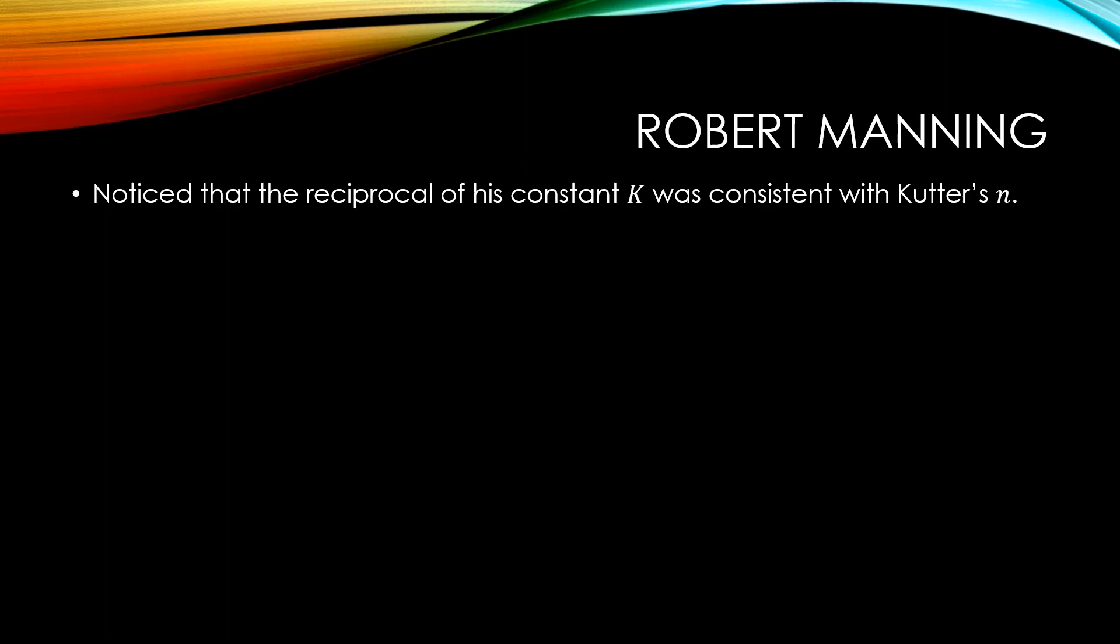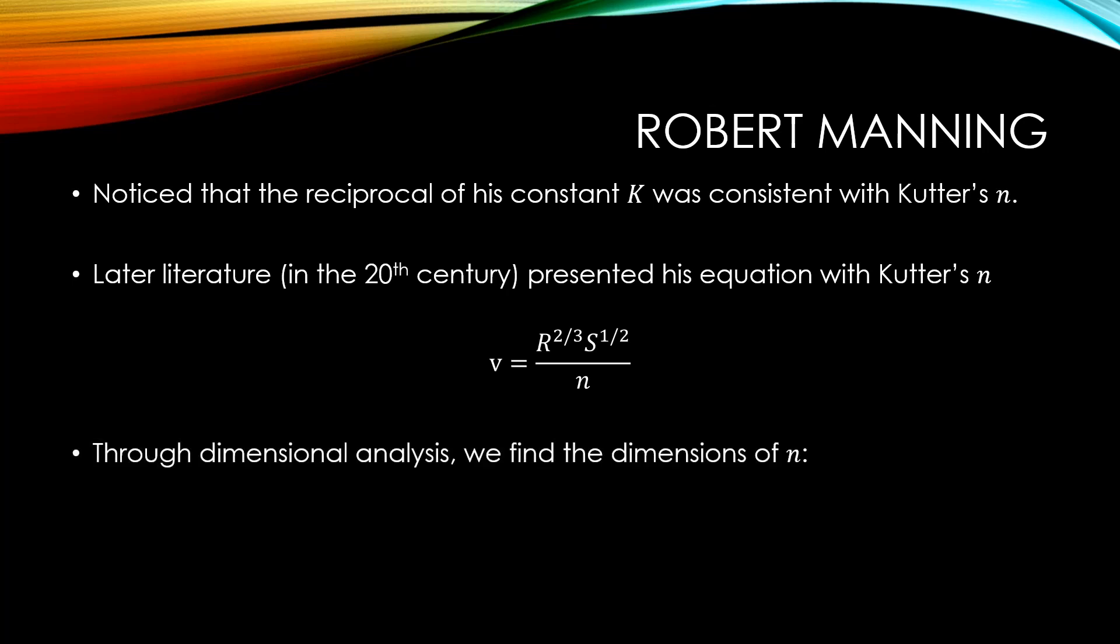Manning noticed that the reciprocal of his constant k was consistent with Kutter's roughness coefficient, and he noted this in a letter. However, he never proposed that his equation be used using Kutter's coefficient. Later literature in the early 20th century presented his equation using Kutter's n, and it took the following form. Through dimensional analysis, we find the dimensions of n are of time over the cubic root of length. This will be important in a second.